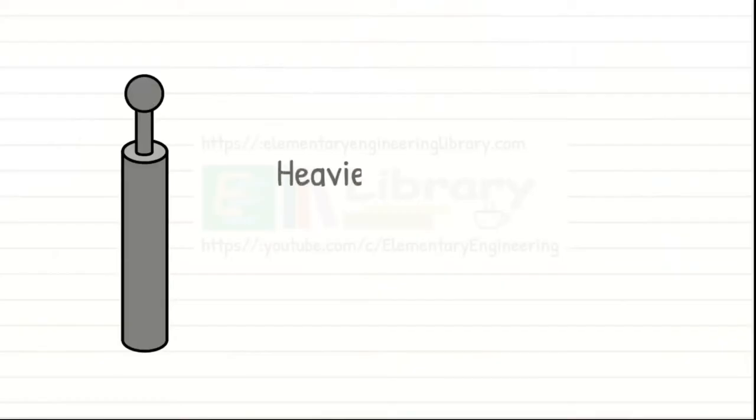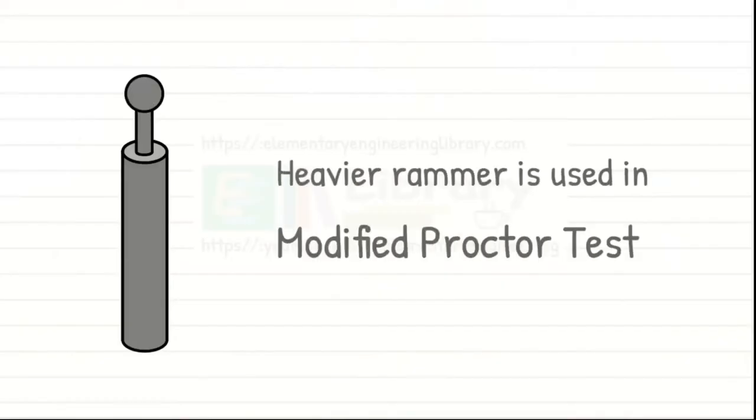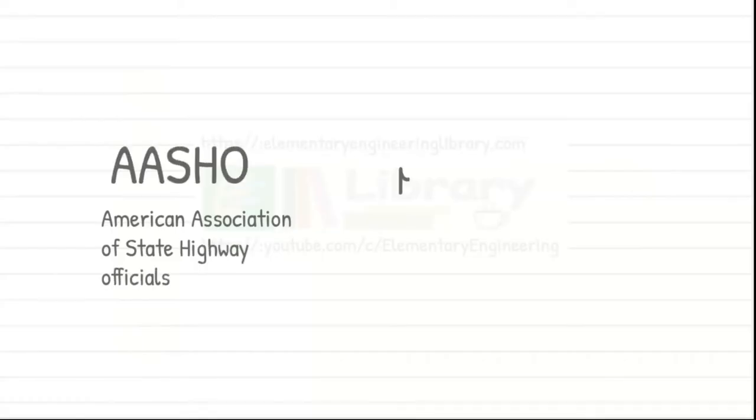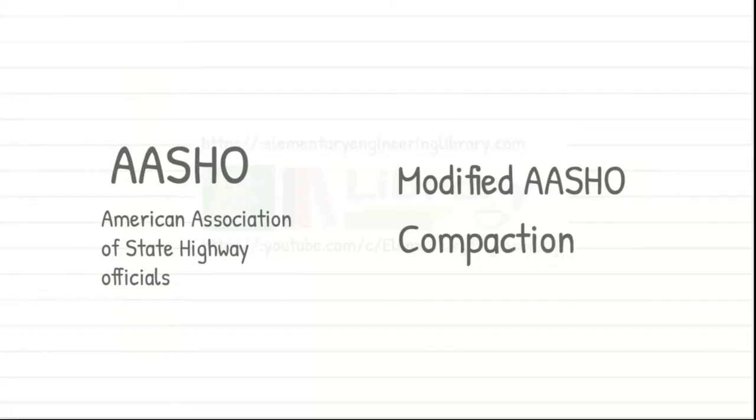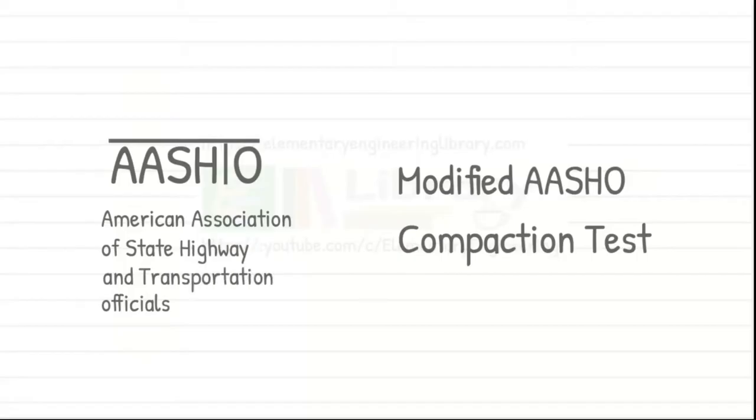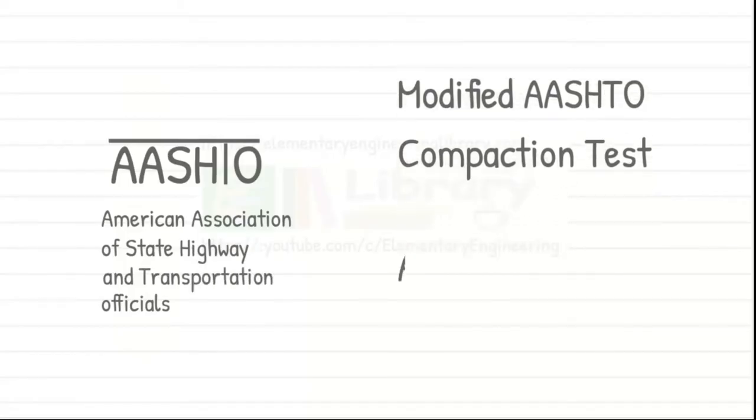But a rammer used in modified test is heavier compared to that of standard proctor test. The test was standardized by American Association of State Highway Officials and was also known as Modified AASHTO Compaction Test. But AASHTO has become AASHTO and the test is now referred to as Modified AASHTO Compaction Test or AASHTO T180 test method.